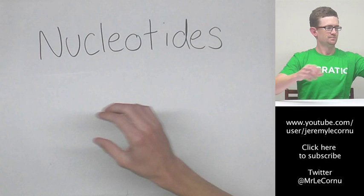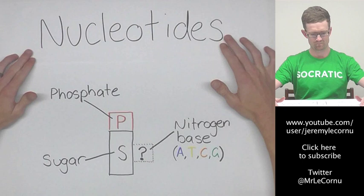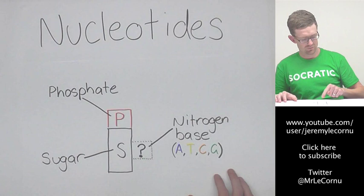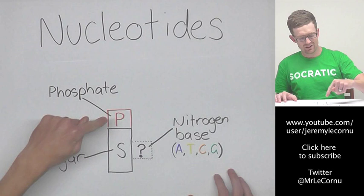Now nucleotides look like this. They consist of a phosphate molecule, a sugar molecule, and a nitrogen base. Now the phosphate and the sugar are always the same in DNA.